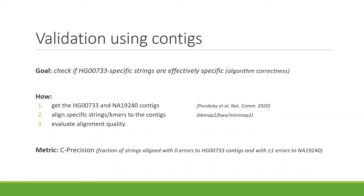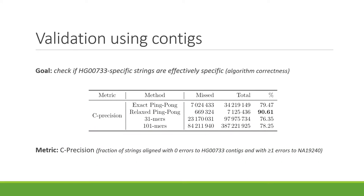We performed a contig-based validation to check if our strings are effectively specific. We aligned specific strings and specific k-mers to HG00733 and NA contigs and evaluated alignment quality using a metric we call C-precision: the fraction of strings aligned perfectly with zero errors to the HG contigs and not perfectly — with more than one error — to the NA contigs. The results show that relaxed ping-pong achieves a C-precision of 90%, followed by the exact version. This means 90% of the strings we retrieve are effectively specific to the individual, proving that our algorithm is correct.